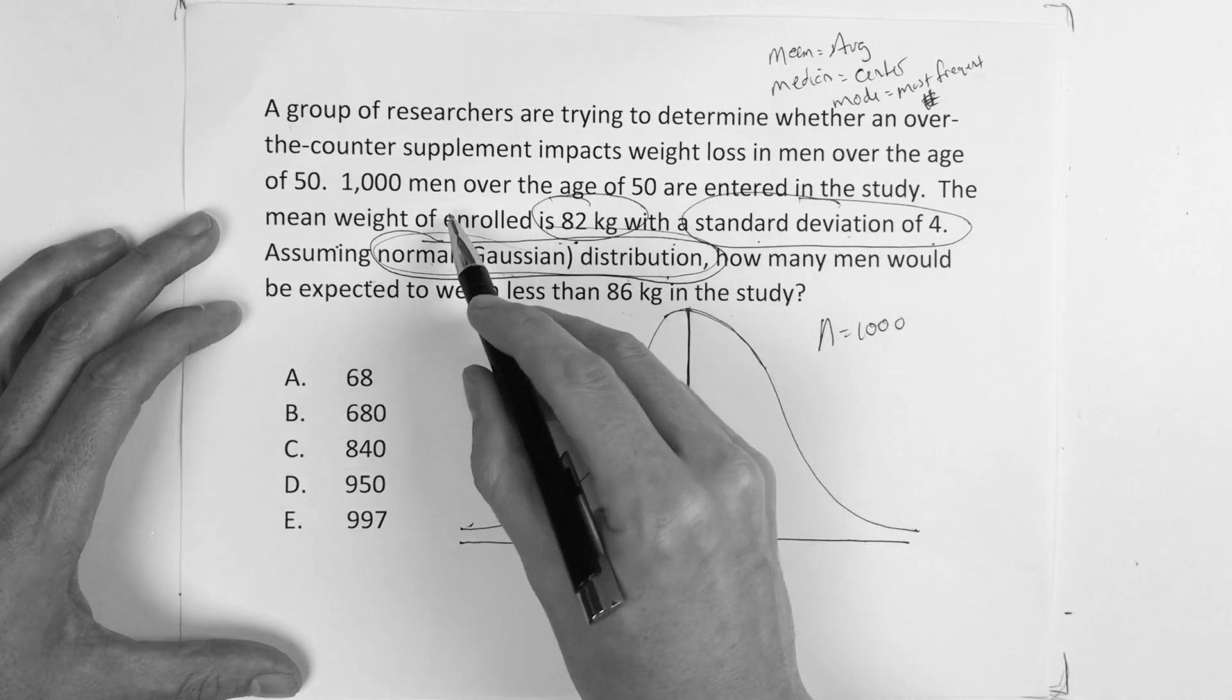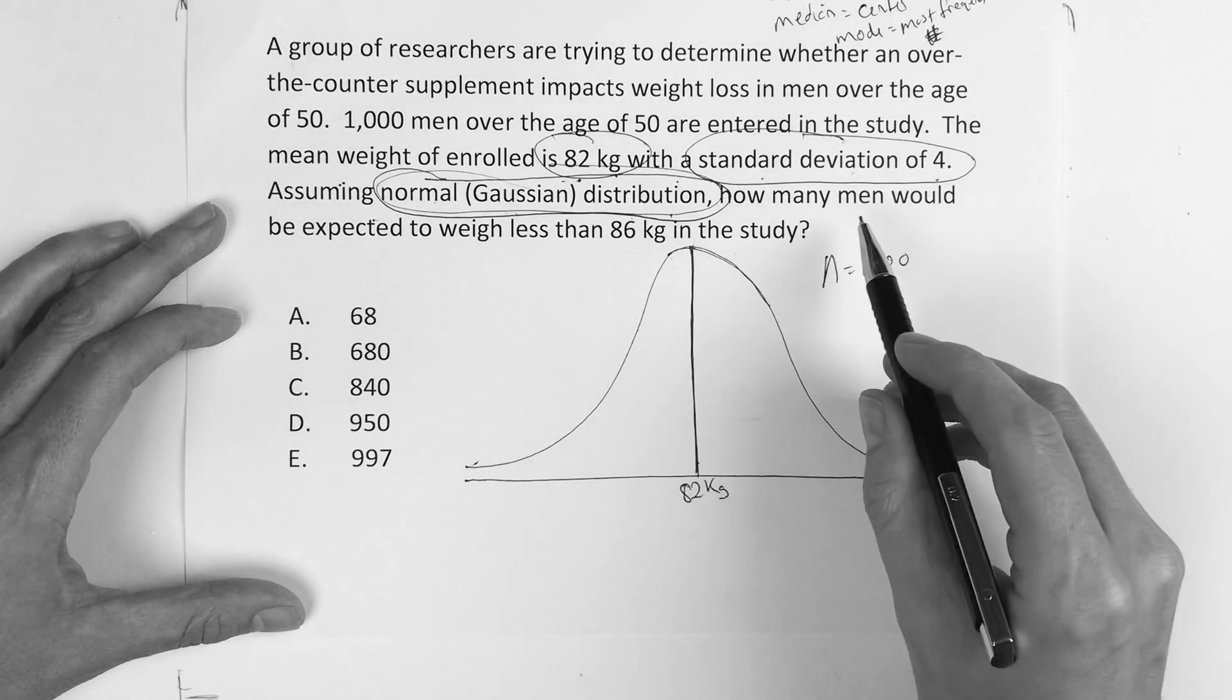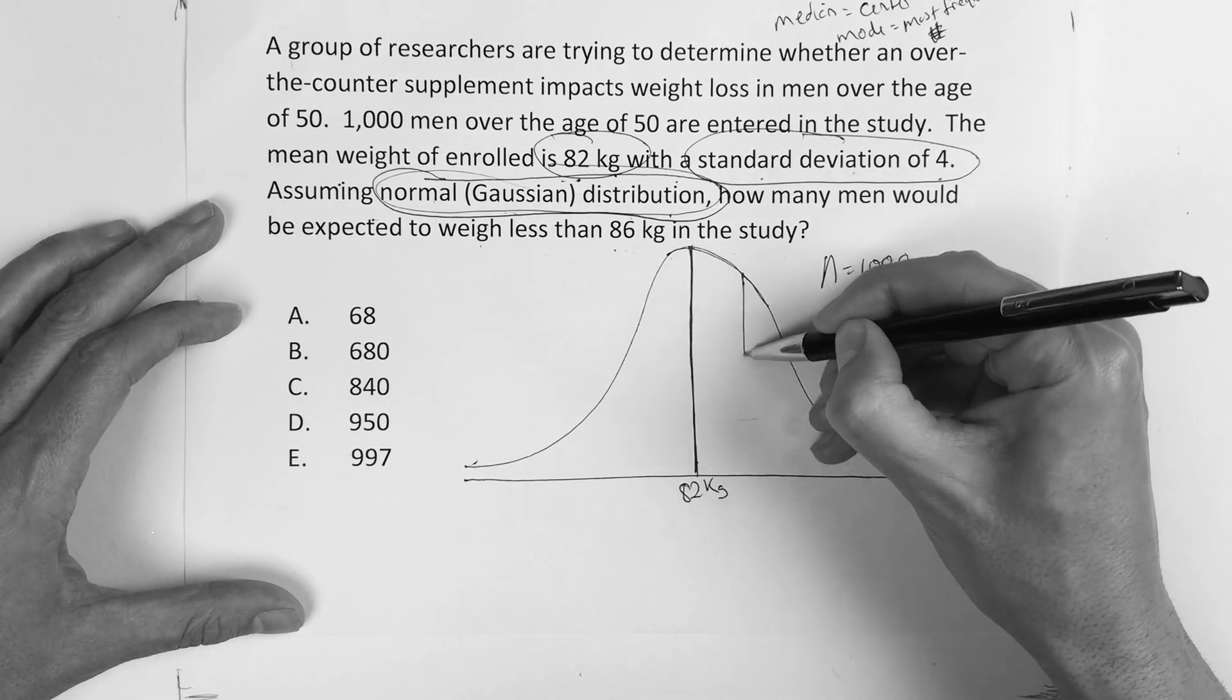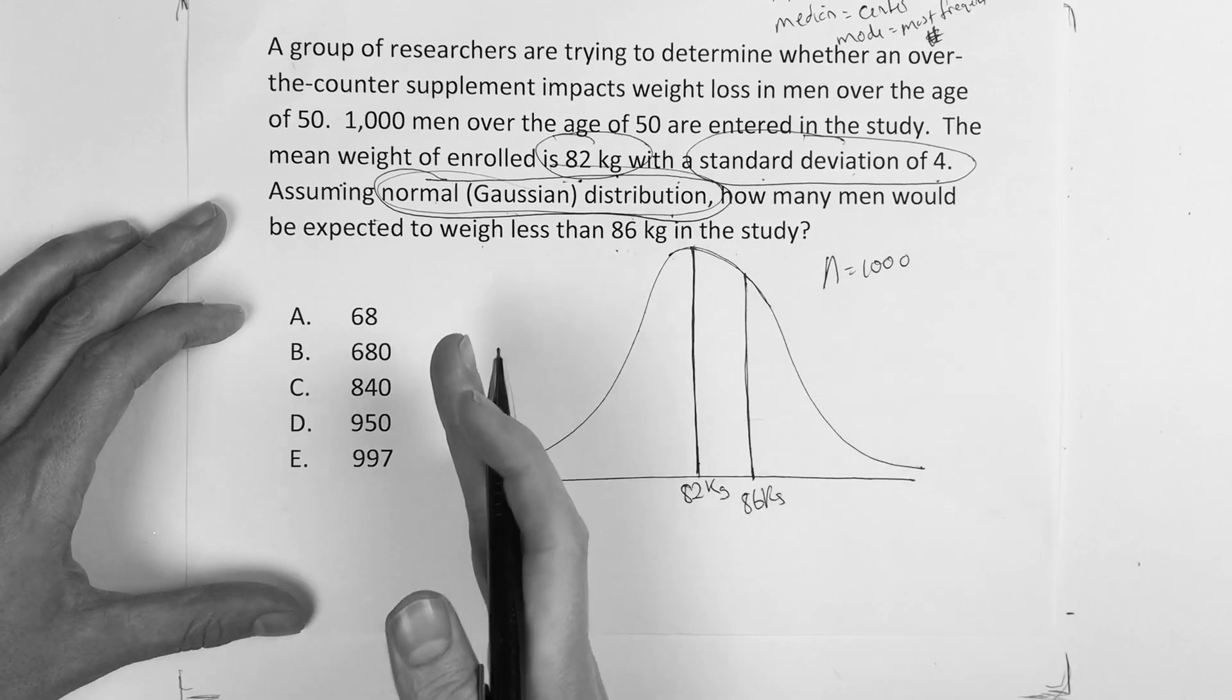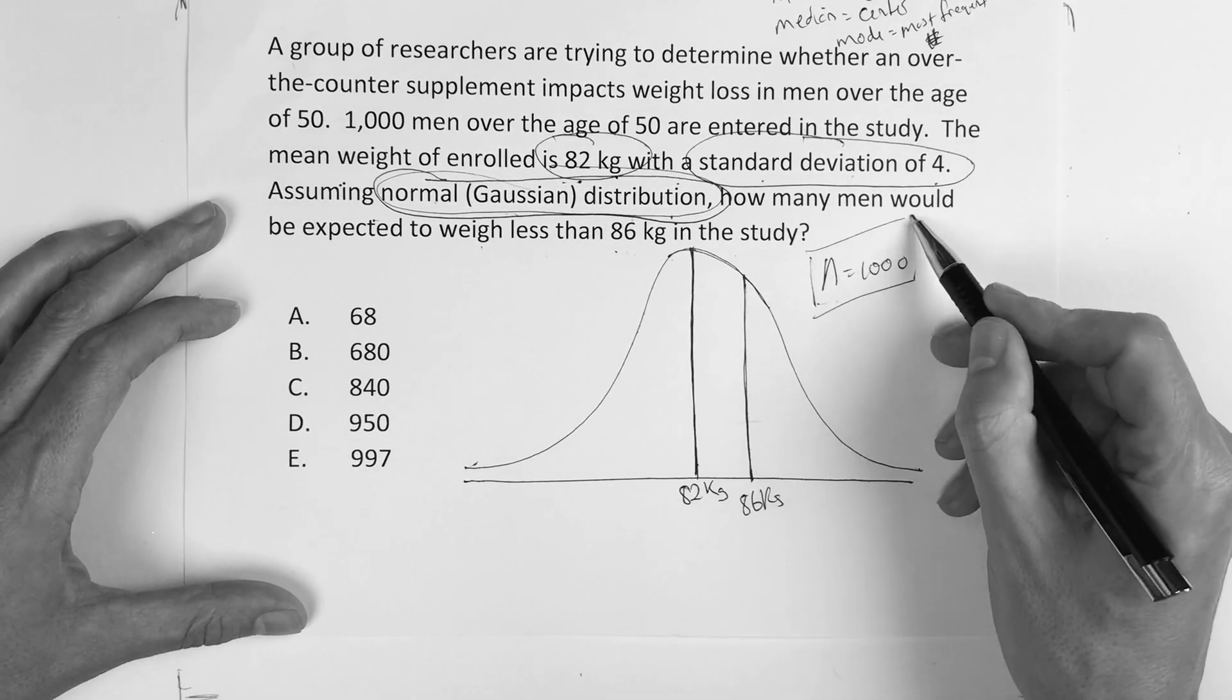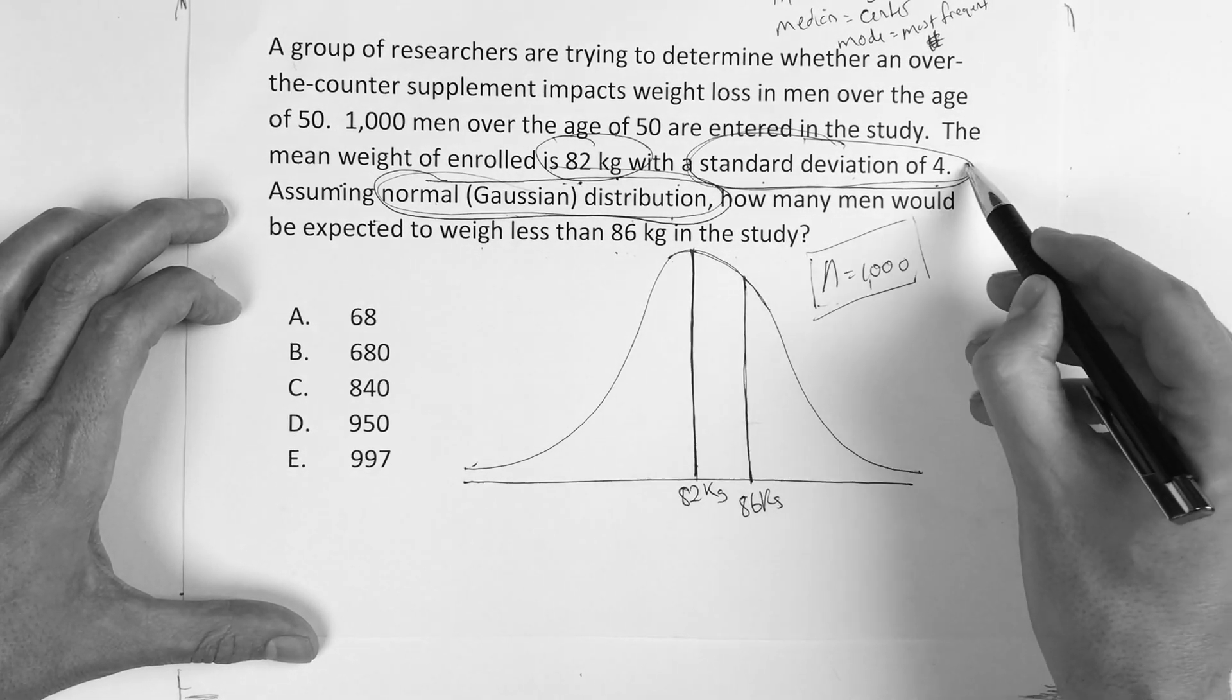The mean they're telling us is 82 kilograms. The question says, how many people would be expected to weigh less than 86? So somewhere over here we're going to put 86. We've got to figure out how many people are less than 86 in this study where there's n equals 1,000, there's 1,000 men. It comes down to: do you understand standard deviation?